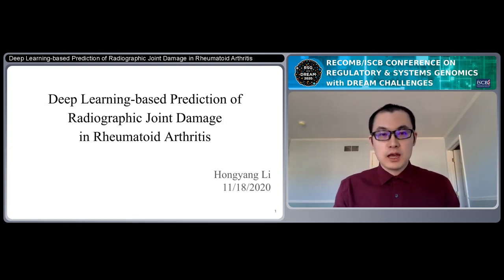Hello, everyone. My name is Hongyang Li. I'm a research investigator from the University of Michigan. It's a great pleasure for me to present our deep learning-based method for radiographic joint damage prediction in rheumatoid arthritis.